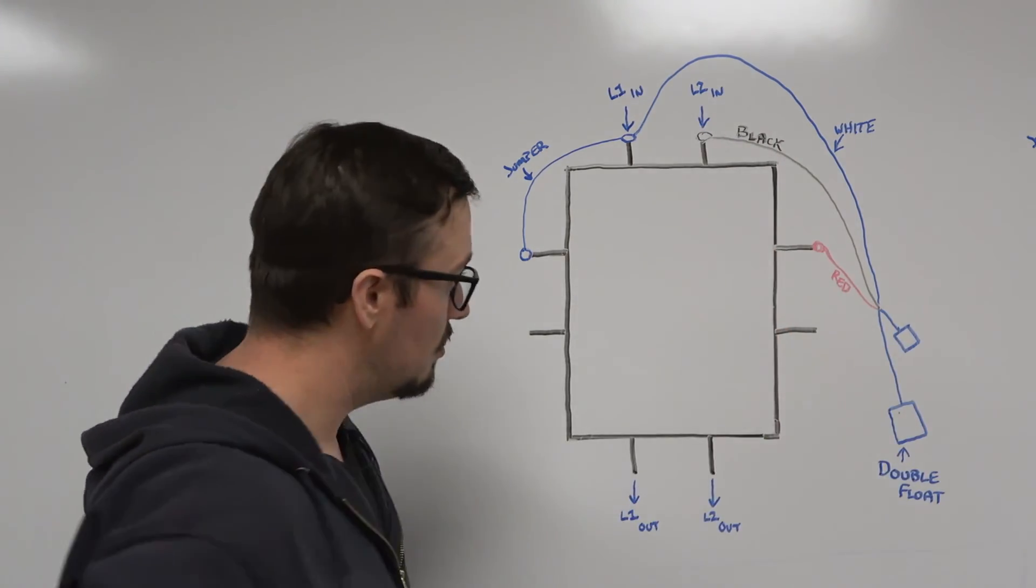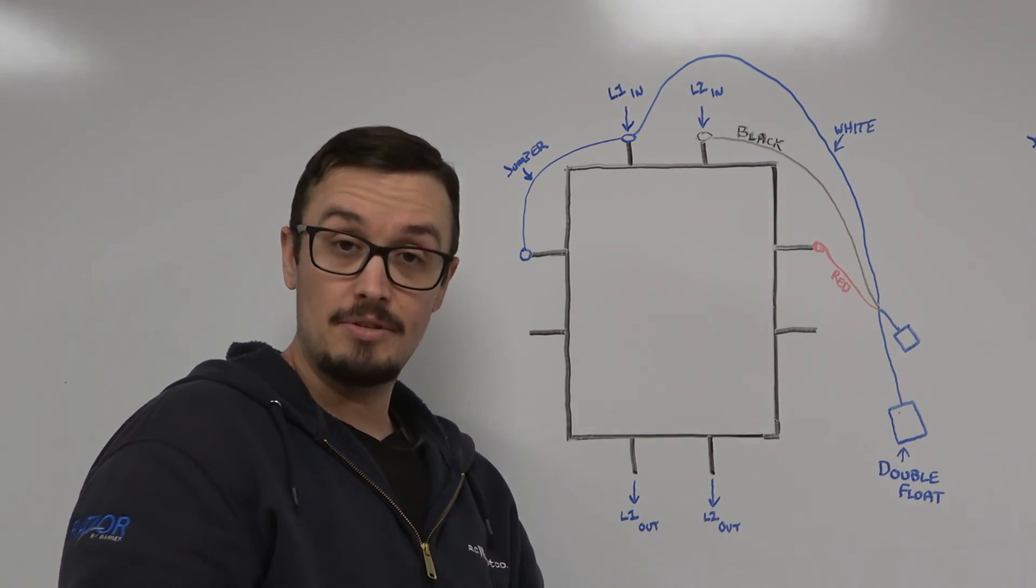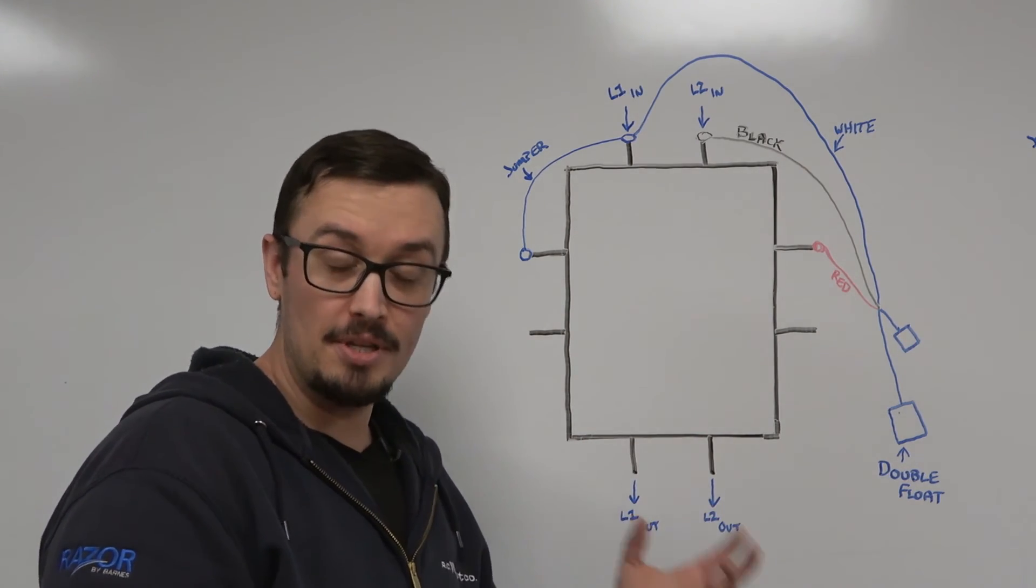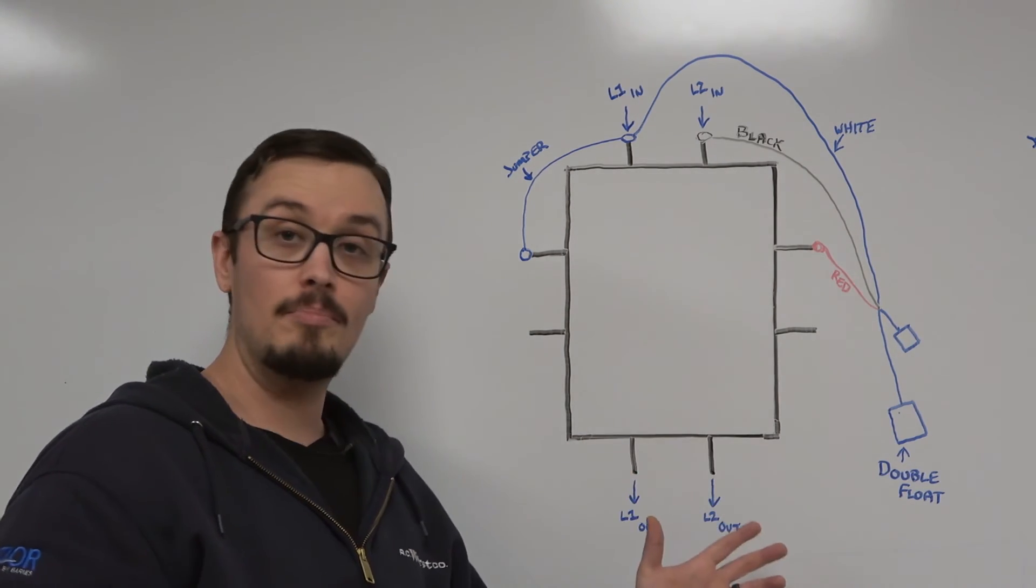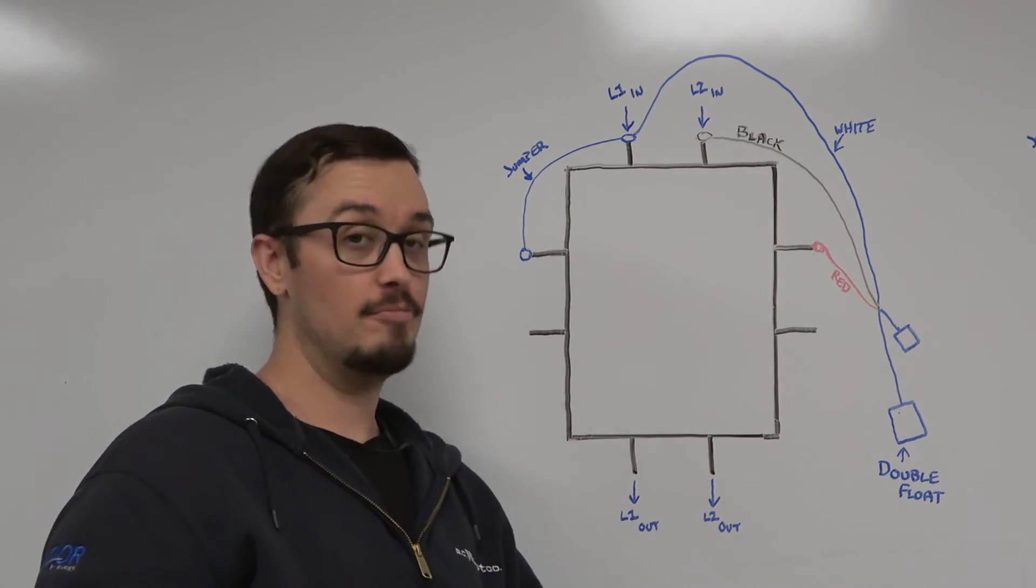Depending on whether those are both open or closed, it's going to send voltage through and energize that coil or de-energize the coil based on the float positions. Now we're just going to go ahead and make a little bit more sense of this by going out in the shop and wiring up an actual contactor with a double float switch.